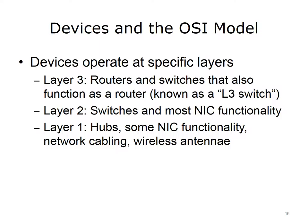The OSI model shows that certain devices operate at specific layers. At layer 3: routers and switches that function as routers — such a switch is a layer 3 switch. Layer 2 has switches and most NIC functionality. Layer 1 has hubs, some NIC functionality, network cabling, and wireless antennas.